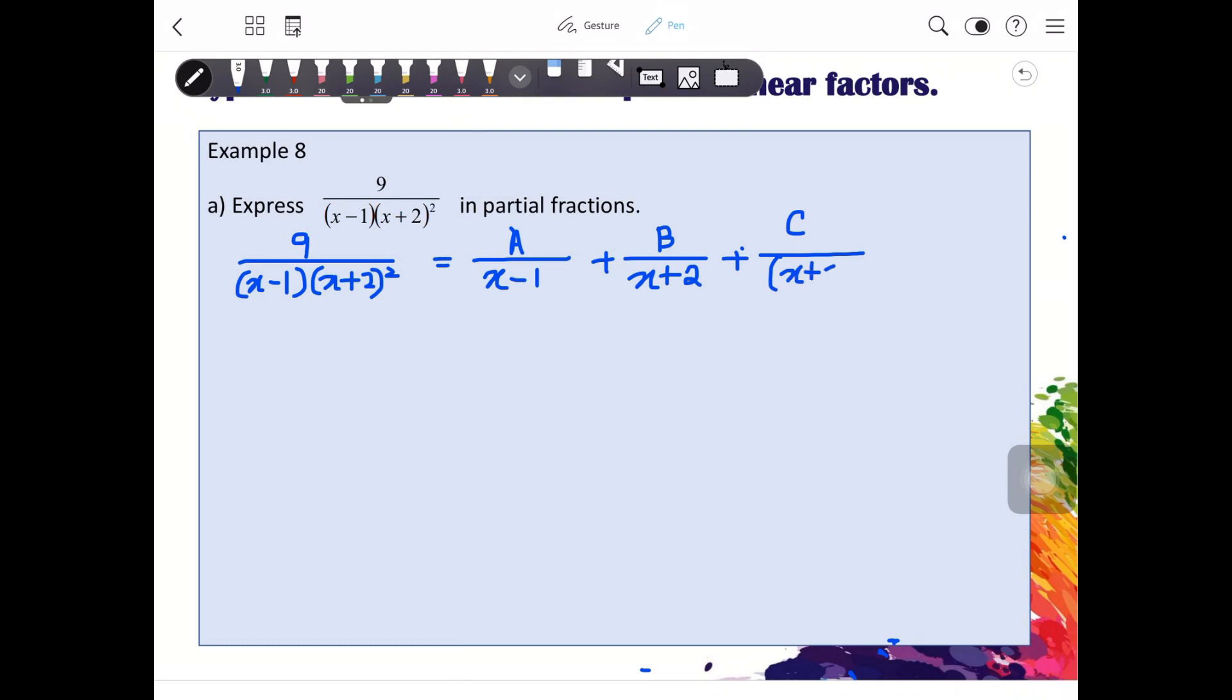So, the next step can be a bit confusing for certain students. Please pay attention. We want to combine them together by equating the denominator. So, for A, you will have to multiply x plus 2 squared for top and bottom.